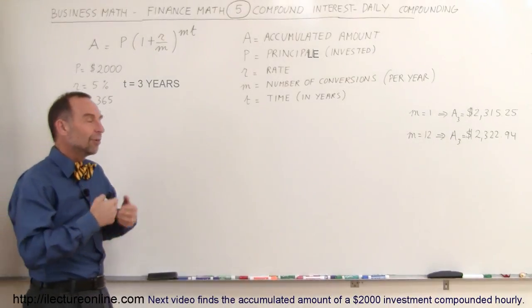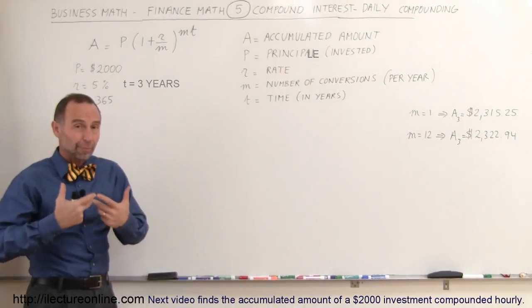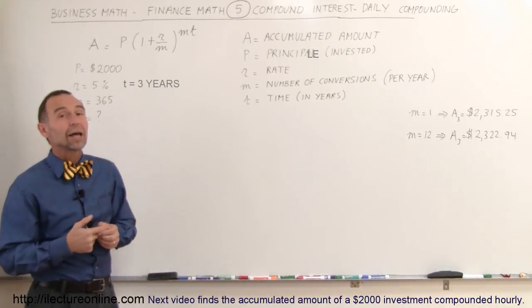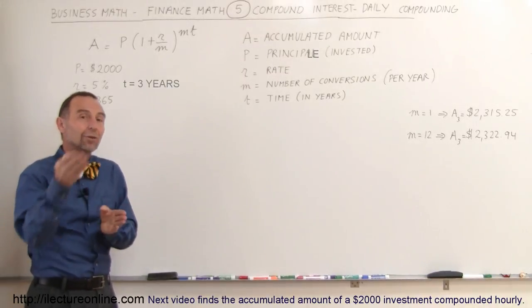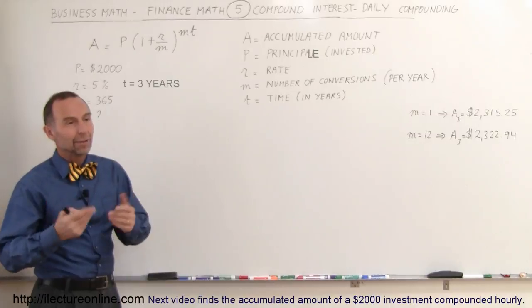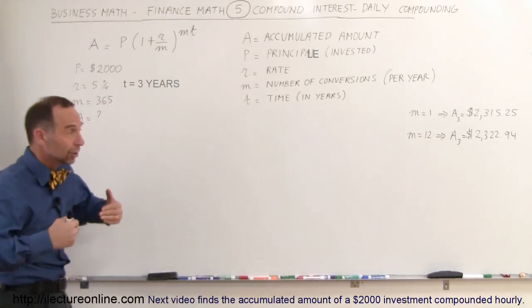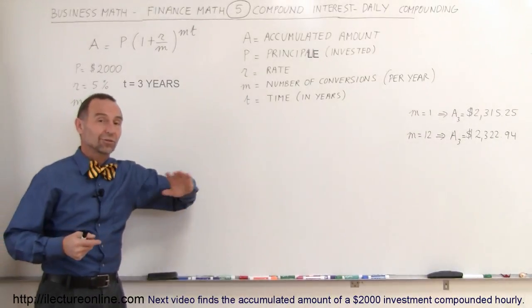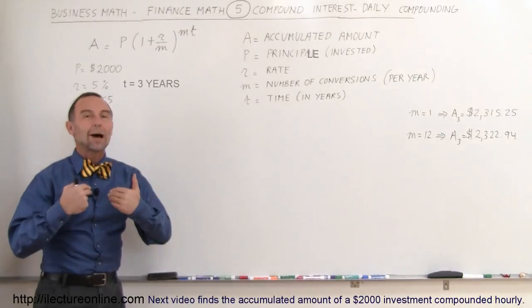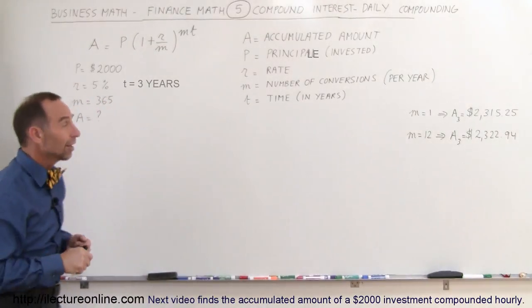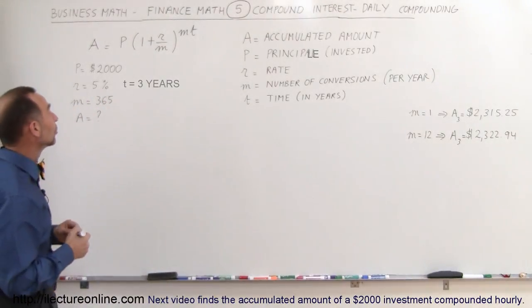So with the invention of computers and making them usable for banks, we could calculate all the account holders' interest earned every day and add it to the account. And of course, a big advertisement stunt would be: look, the next guy just compounds monthly or yearly, we compound daily, you will earn more money with us. Let's go find out how much more money they would earn.